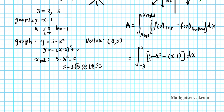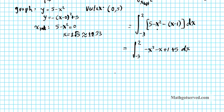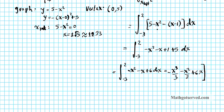Let's simplify the integrand. We have the integral from negative 3 to 2 of negative x squared minus x plus 1 plus 5, dx. Simplifying further, that becomes the integral from negative 3 to 2 of negative x squared minus x plus 6, dx. Now let's do term-by-term integration, applying the power rule to every term.